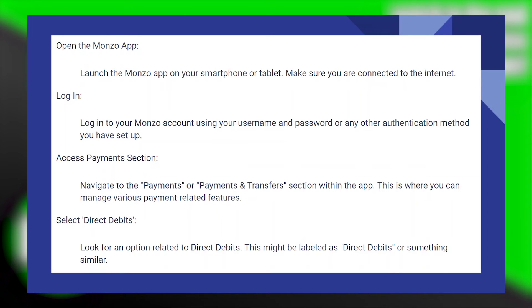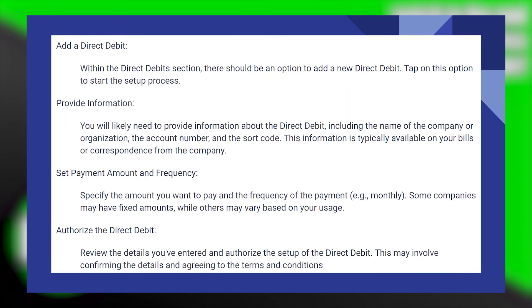You will likely need to provide information about the Direct Debit, including the name of the company or organization, the account number, and the sort code. This information is typically available on your bills or correspondence from the company.